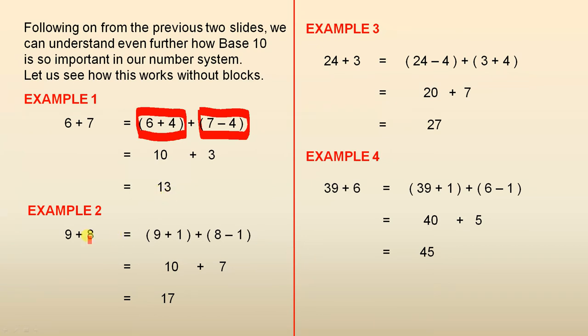9 plus 8. How do we make a 10? Well, you just add 9 plus 1. That gives us our 10. Where did we get that 1 from? We got it from this 8 here, so we have to take it away. That's where we got it from. So 9 plus 1 is 10. 8 take away 1 is 7. 10 plus 7 is 17. One lot of 10 and 7 ones.